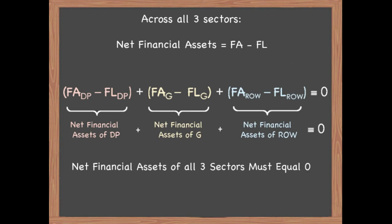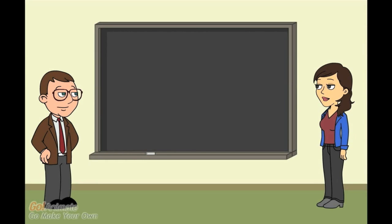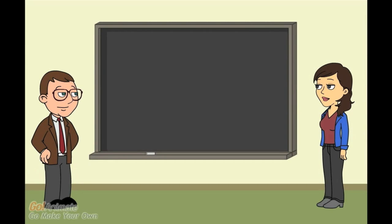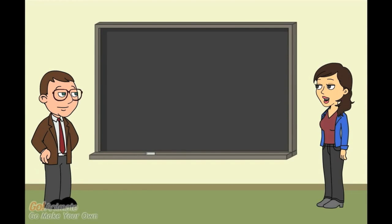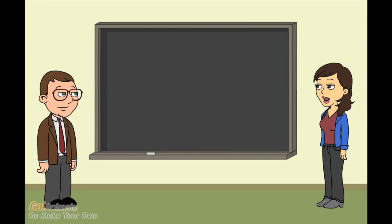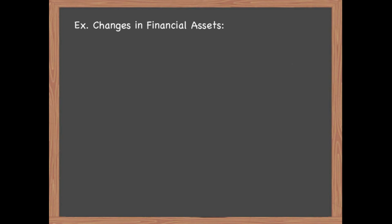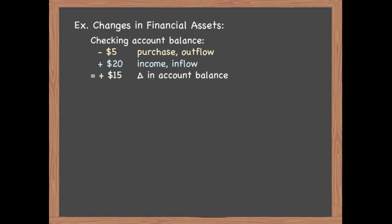This means that if one sector has net financial assets greater than zero, another sector must have net financial assets less than zero. That makes sense. But what exactly does it mean for a sector to run a deficit or surplus — or as Obama said, to tighten its belt? To answer it we need to look at how outstanding financial assets and liabilities change over time. Up until now we have been looking at accumulated amounts on the balance sheet, such as the total balance of your checking account deposit.